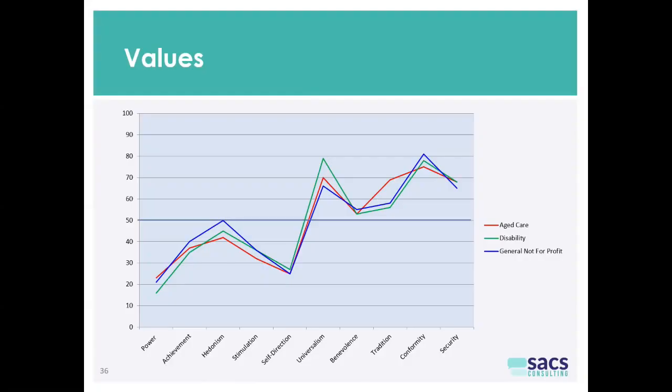We often talk about positive deviance in organisations. The idea of positive deviance is that if you truly want change in an organisation, you can't get it until somebody does something against the typical. Positive deviance is change which causes change for good in organisations. So this is a sector which will struggle to find large numbers of people who believe in this.